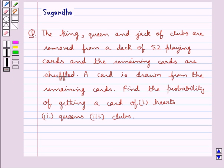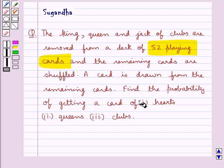Hello and welcome to the session. In this session we discuss the following question: The king, queen and jack of clubs are removed from a deck of 52 playing cards and the remaining cards are shuffled. A card is drawn from the remaining cards. Find the probability of getting a card of hearts, queens, clubs.